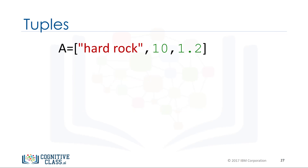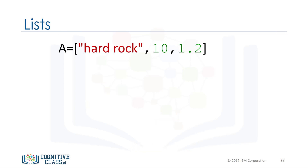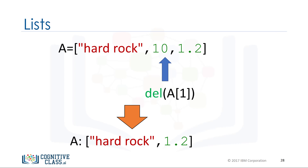We can delete an element of a list using the del command. We simply indicate the list item we would like to remove as an argument. For example, if we would like to remove the first element, the result becomes '10, 1.2'. We can also delete the second element, and this operation removes the second element of the list.